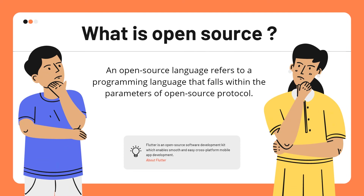When we talk about open source, many times you have heard about open source languages. An open source language refers to a programming language that follows open source protocols. Flutter is not a programming language — Flutter is an open source software development kit. The programming language used inside Flutter is Dart.